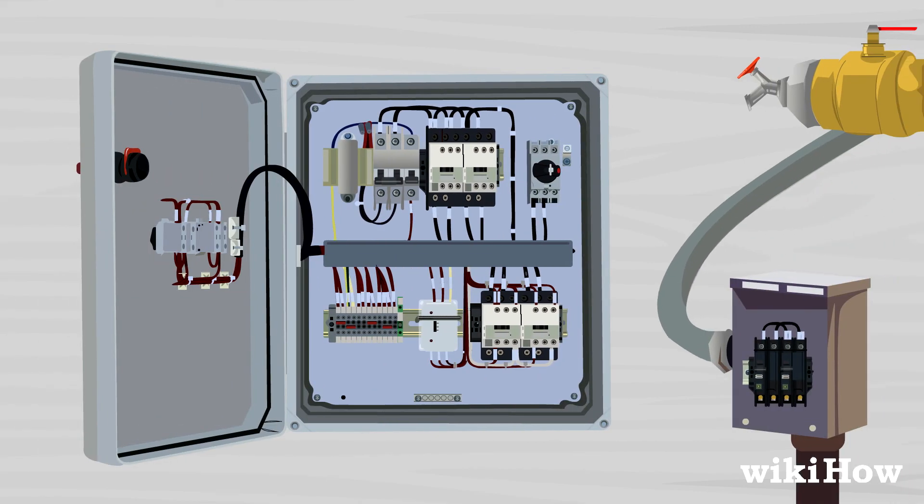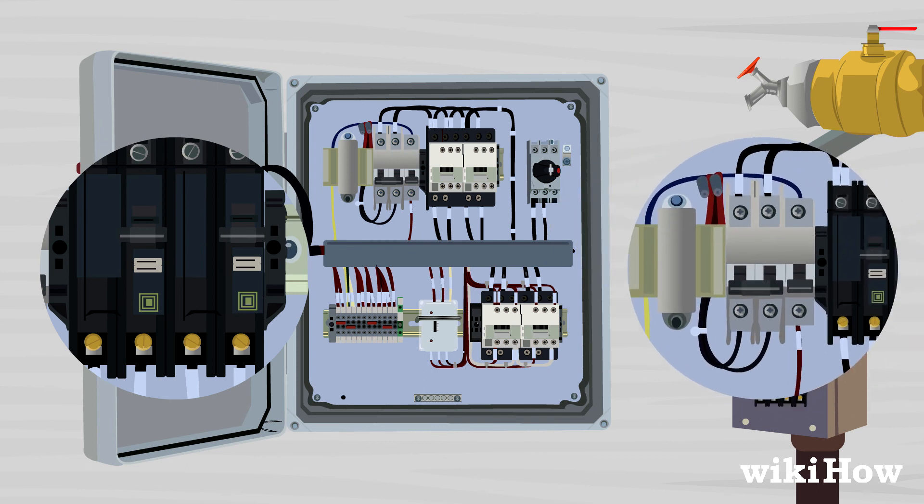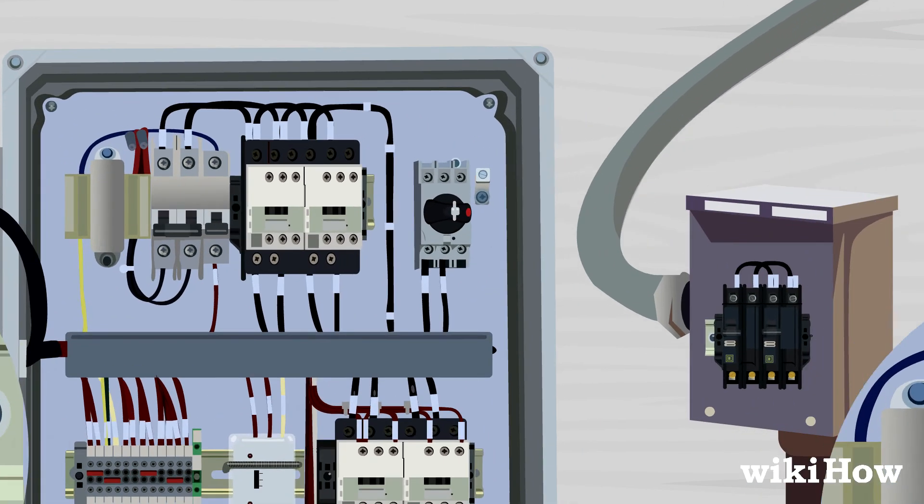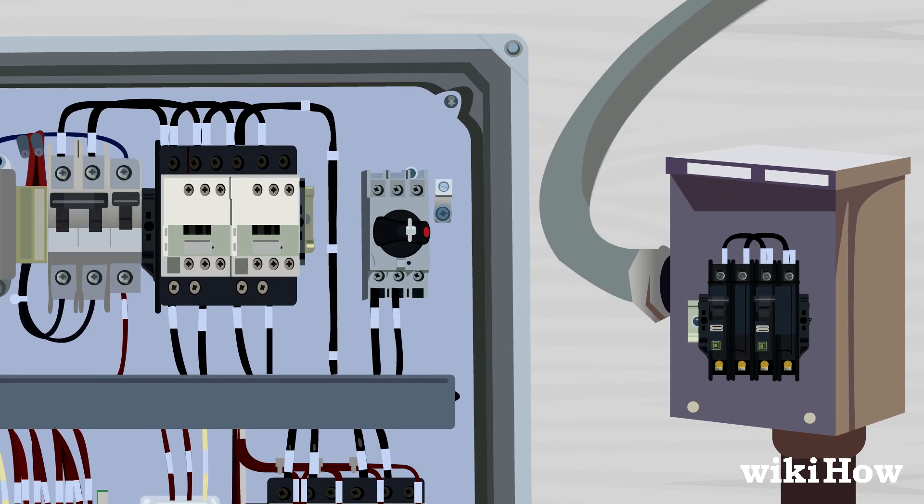Next, find the power switches for the pump. There may be one at the pump and another at the main breaker for the building. Make sure both of them are switched on.